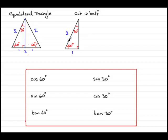When it comes to finding the cosine of 60 degrees, you should know your basic rules for comparing sides. You might remember it as SOH CAH TOA: sine is opposite over hypotenuse, cosine compares adjacent over hypotenuse, and tangent compares opposite over adjacent.